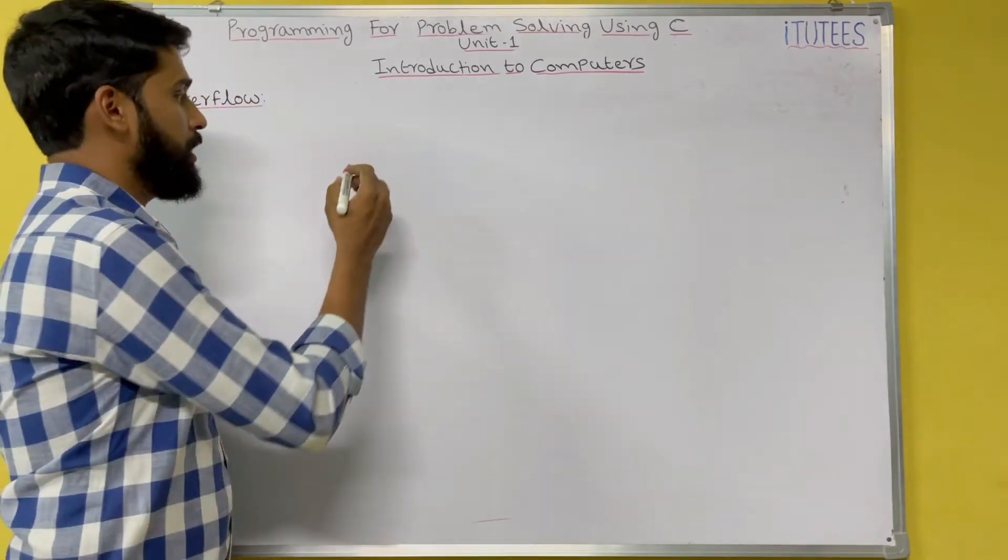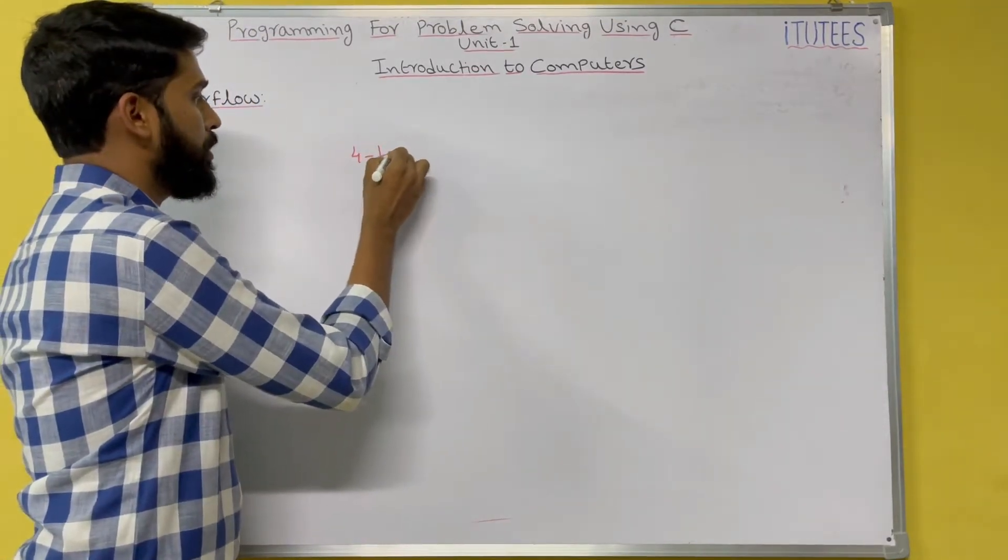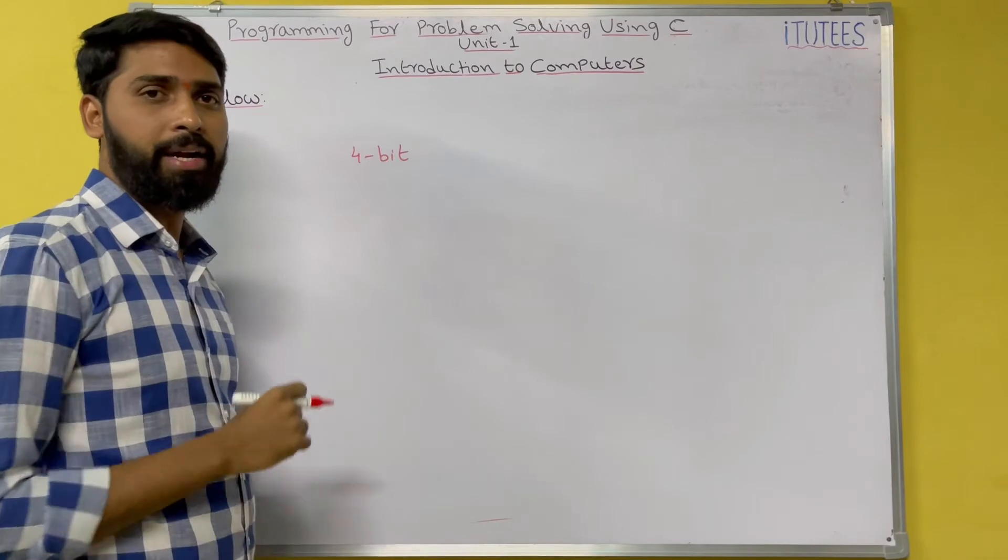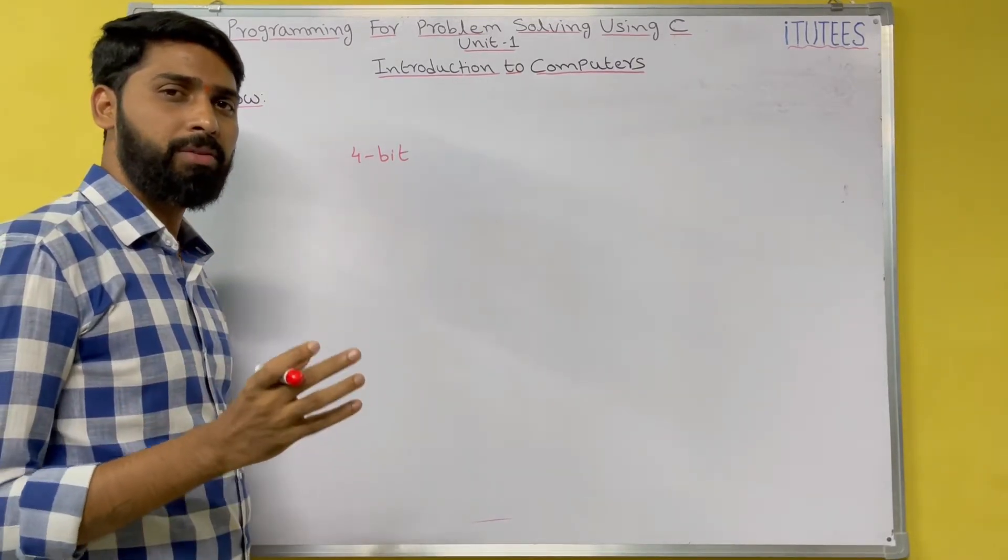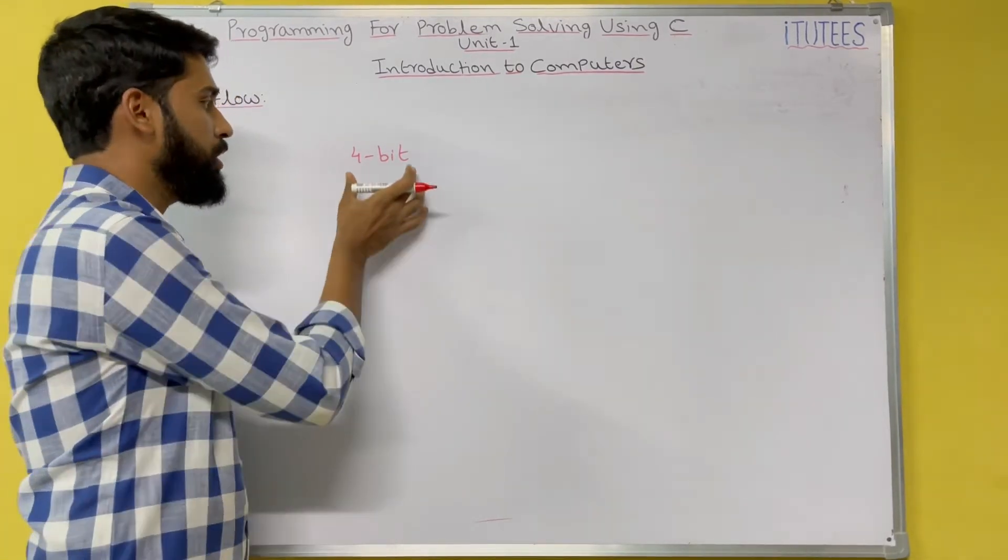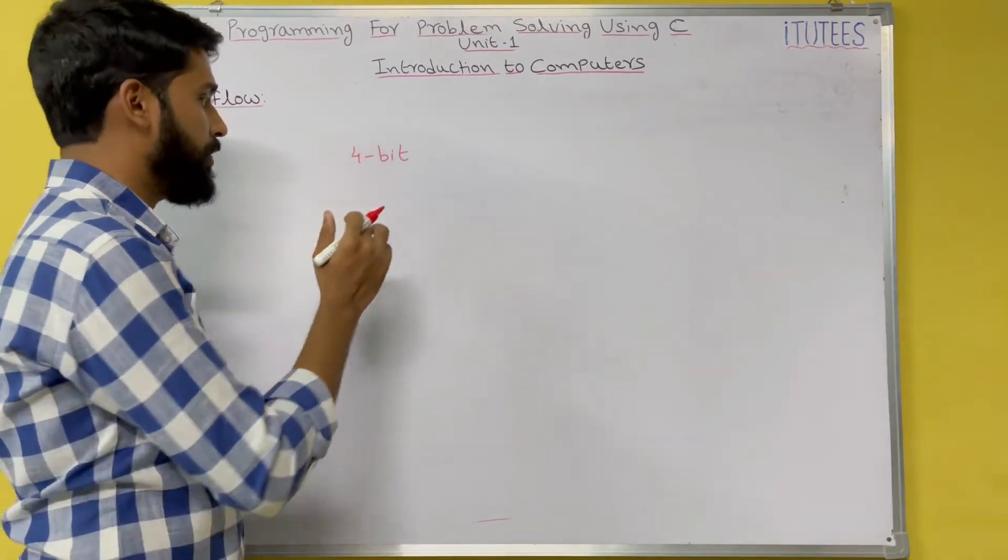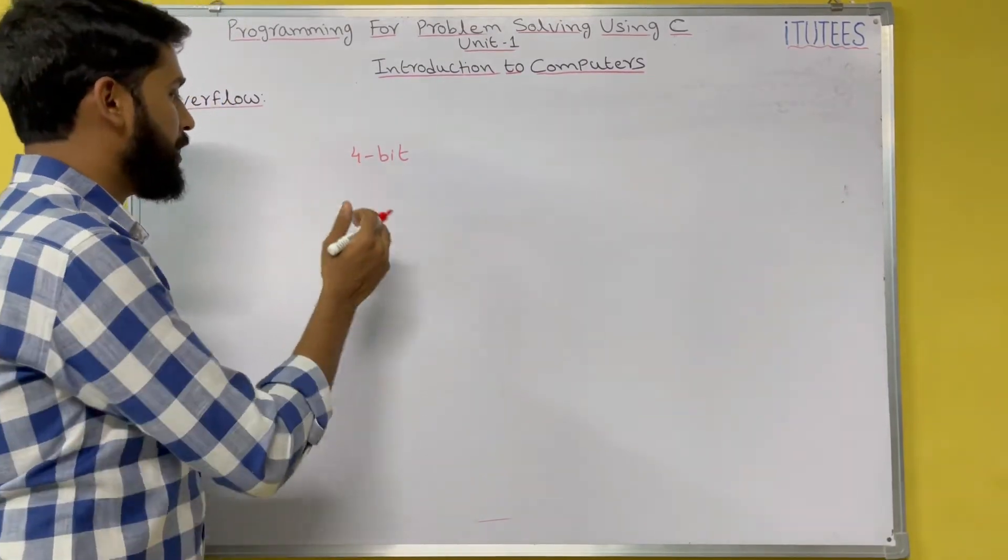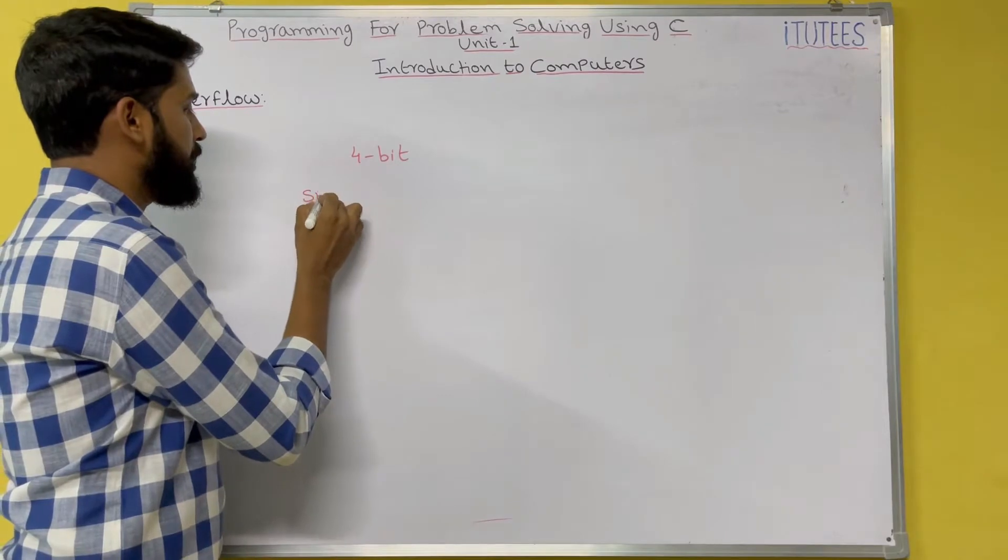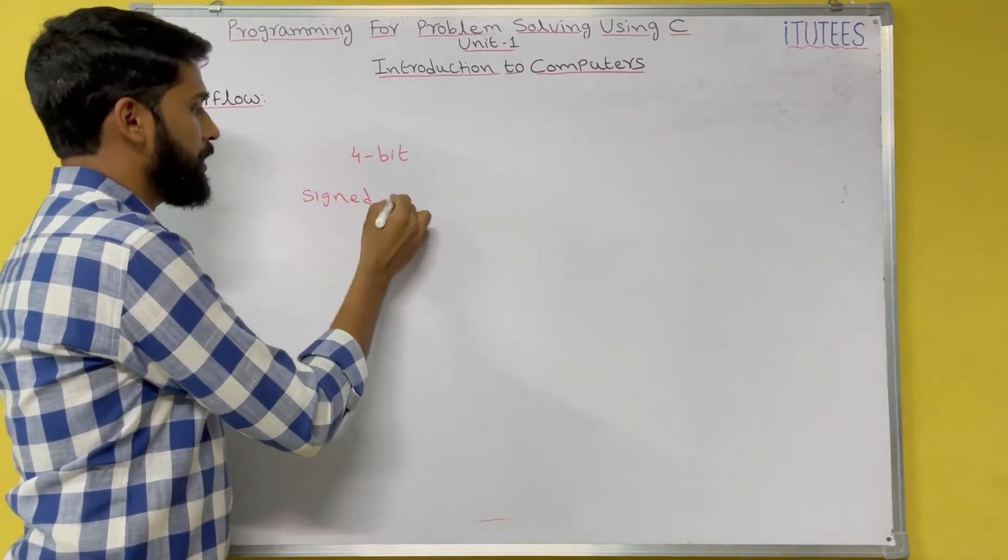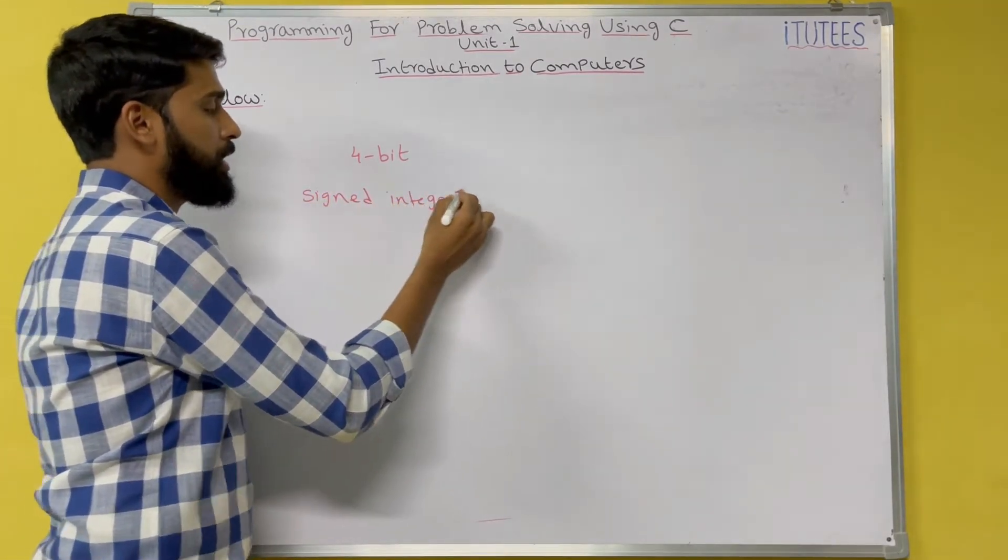So what does overflow mean? Let's say your computer system supports 4-bit data storage. That means the number, whatever it is, is stored in these 4 bits only. For example, you are taking signed integer and unsigned integer.